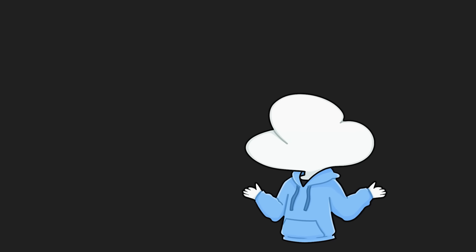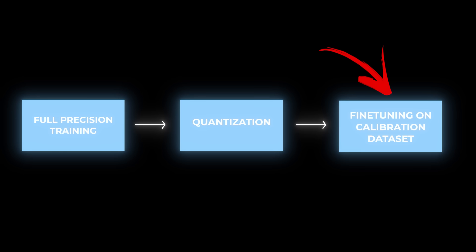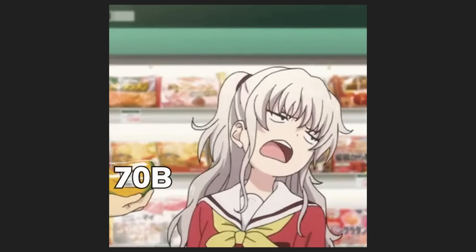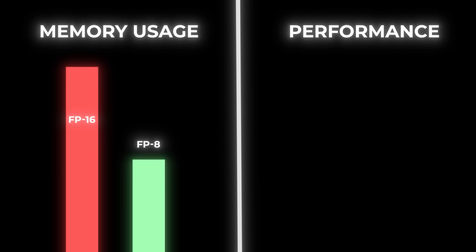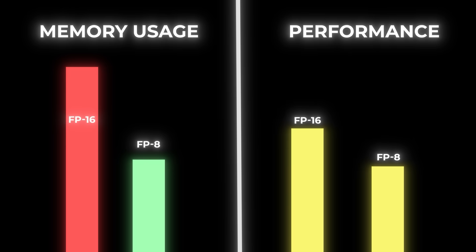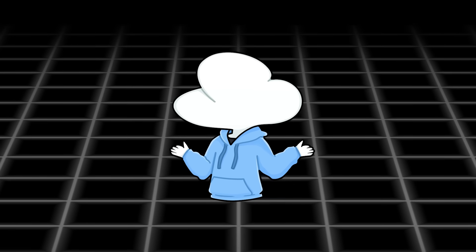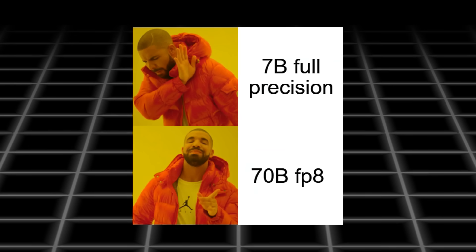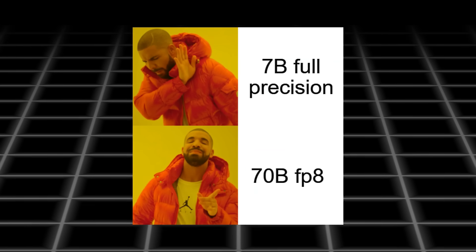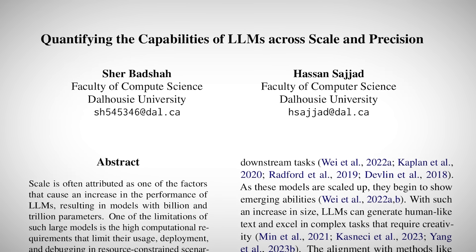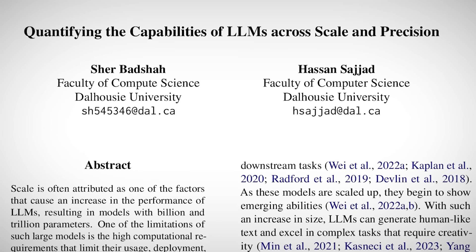To make quantized models usable, there's a calibration dataset that fine-tunes the models again after quantization. And this method does show we can cut memory usage by at least half. The performance drop-off between FP16 and FP8 is not that much, so in most cases it'll probably be better to run a model at FP8 — it'll be smarter and more economical. Research papers back up that using a quantized model is usually better than using a smaller model with full precision.